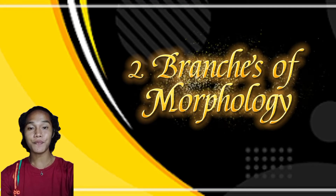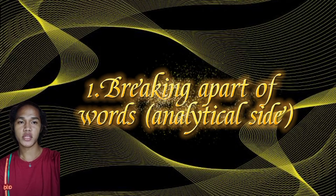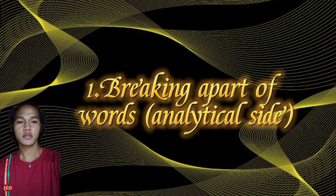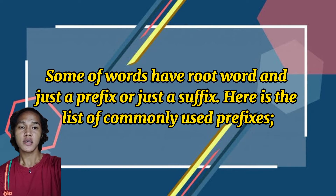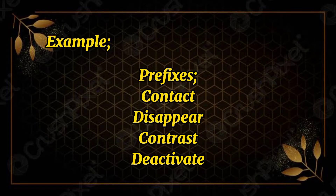We have two branches of morphology. The first one is the breaking apart of words, or the analytical side. Some words have a root word and just a prefix or just a suffix. Here is the list of commonly used prefixes. Examples of prefixes: contact, disappear, contrast, and deactivate.